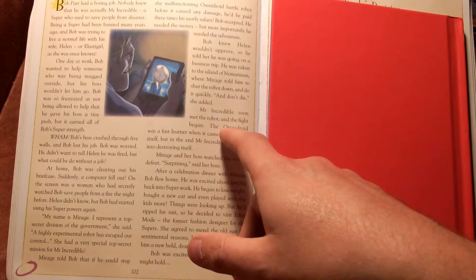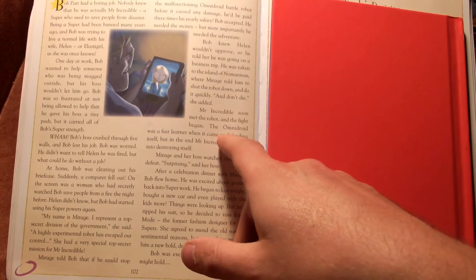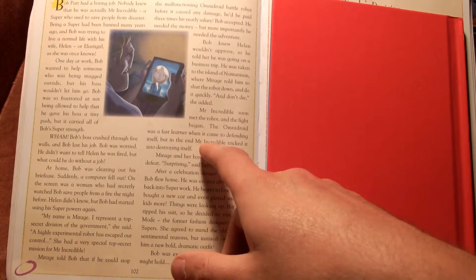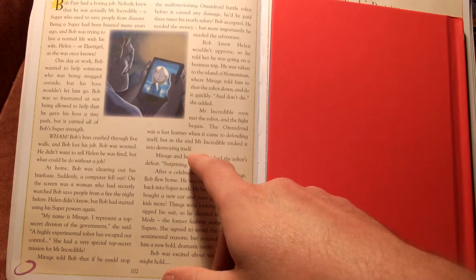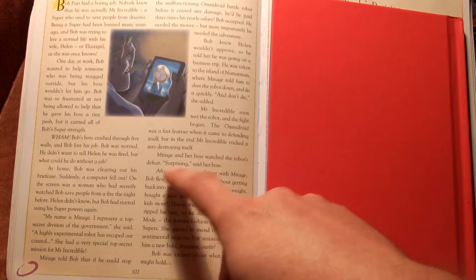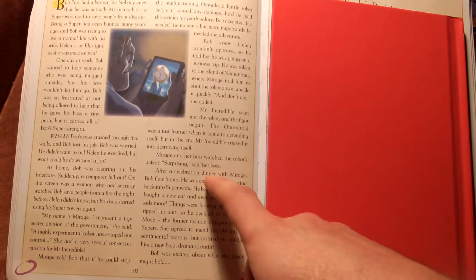Mr. Incredible soon met the robot and the fight began. The Omnidroid was a fast learner when it came to defending itself but in the end Mr. Incredible tricked it into destroying itself. Mirage and her boss watched the robot's defeat. Surprising, said her boss.